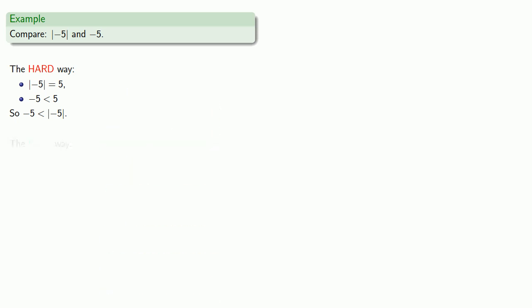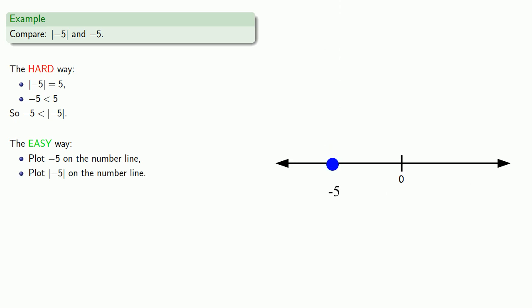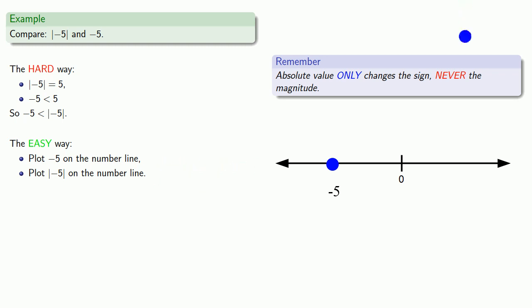Let's try to do things the easy way. We can plot negative 5 on the number line, and we can plot the absolute value of negative 5 on the number line. Remember, absolute value only changes the sign, never the magnitude. So the absolute value of negative 5 will be in the same place as 5. And since negative 5 is to the left of the absolute value of negative 5, negative 5 is less than the absolute value of negative 5.